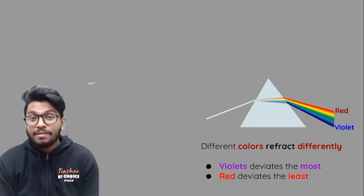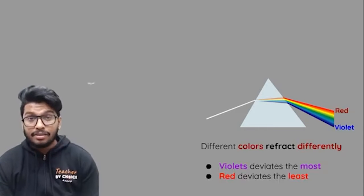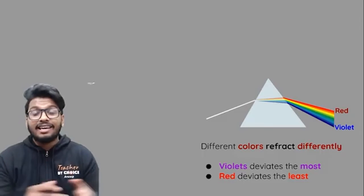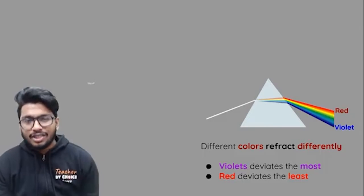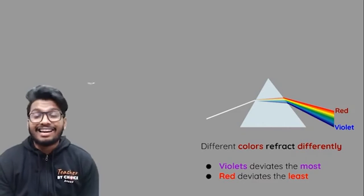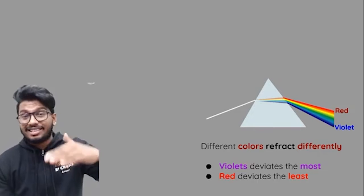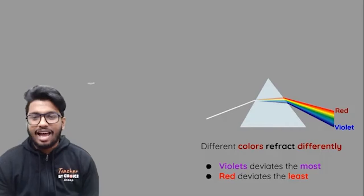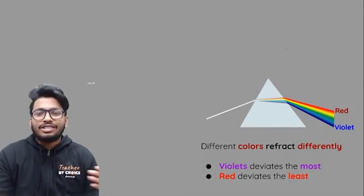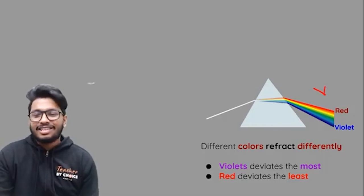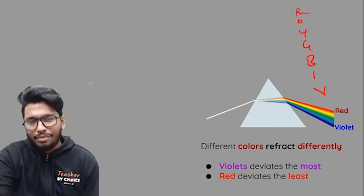When dispersion happens, different wavelengths of light travel at different speeds in different mediums. Red light has the highest wavelength, so it refracts the least. Violet, on the other hand, has the least wavelength and hence refracts the most. That's why you see the beautiful rainbow spectrum — VIBGYOR — when white light passes through a prism.